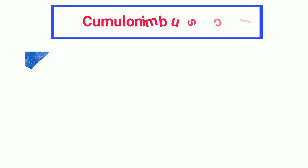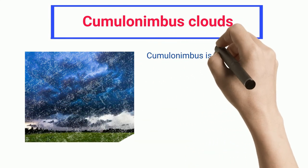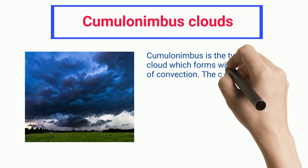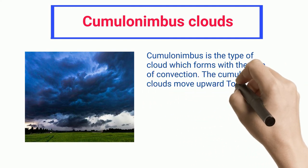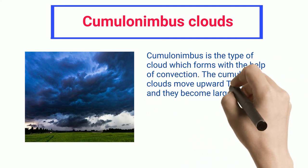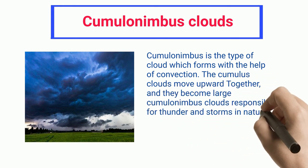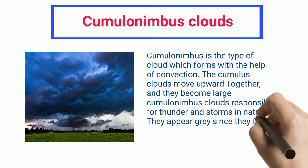Cumulonimbus Clouds: Cumulonimbus is the type of cloud which forms with the help of convection. The cumulus clouds move upward together, and they become large cumulonimbus clouds responsible for thunder and storms in nature. They appear gray since they face opposite to the sun.